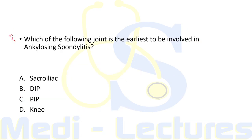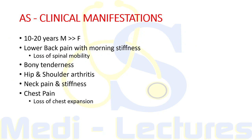The next question is an easier one: which joint is earliest to be involved in ankylosing spondylitis? It will be the sacroiliac joint as we discussed. Now let's discuss the clinical manifestations of AS. It is typically seen in the 10 to 20 years age group and is more common in males. There is lower back pain with morning stiffness lasting a few hours, which relieves with activity.